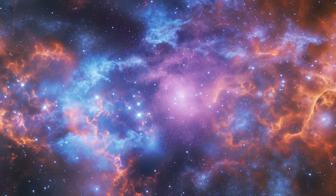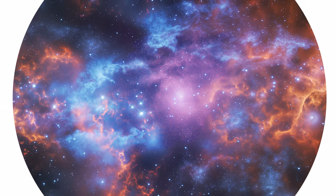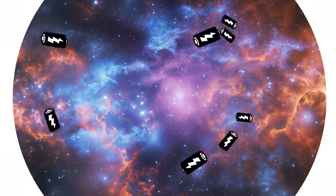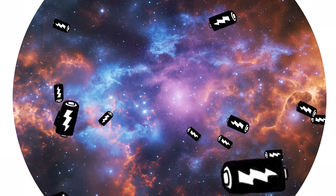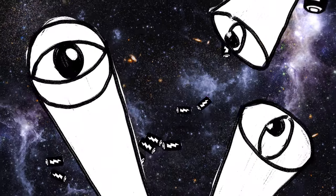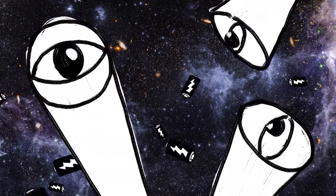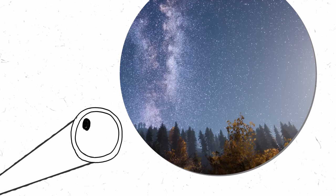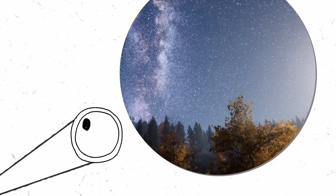Local versus global uniformity. In an infinite universe, energy could become evenly distributed on a local scale, within observable regions, rather than globally. The observable universe, the part we can see and measure, might reach a state of maximum entropy, where energy within this region is evenly spread out. Beyond our observable universe, conditions could vary wildly, but those variations would have no effect on the state of entropy within our observable limits.